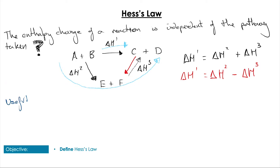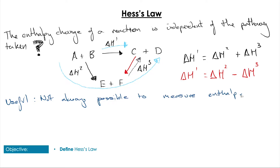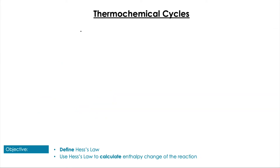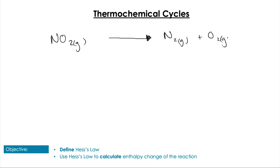This is useful because it's not always possible to measure some enthalpy changes directly, and so we can use this to be able to calculate ones that we're not able to measure. We need to be able to draw thermochemical cycles, which are used to describe the different routes that a reaction could take.